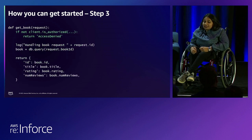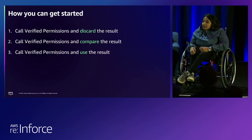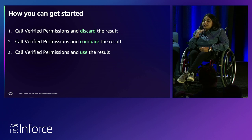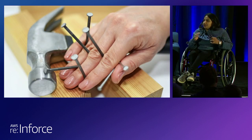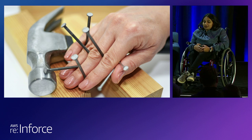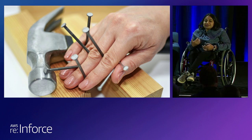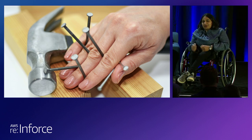Step three: enforce authorization based on the results of Verified Permissions. So there are three steps: call Verified Permissions and discard the results — you can start today, no setup required; call Verified Permissions to compare the results; then use Verified Permissions to enforce the results. The simple message: stop rolling your own authorization systems. Use Verified Permissions to get the consistency, scalability, and security for your own authorization and your own applications.